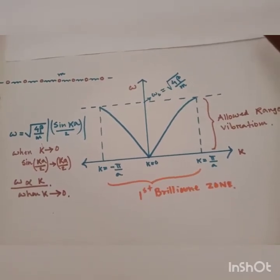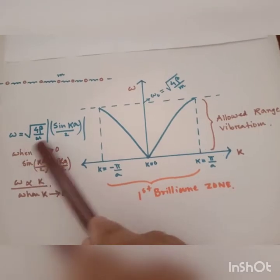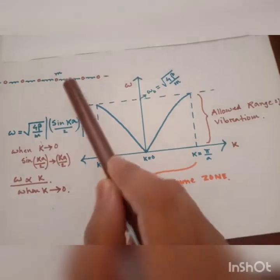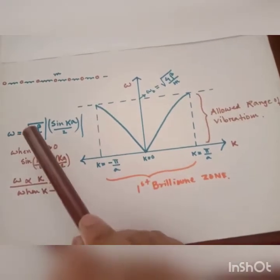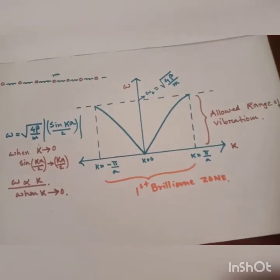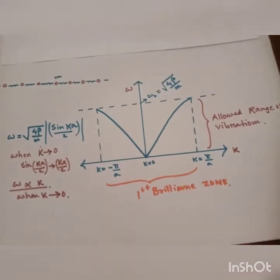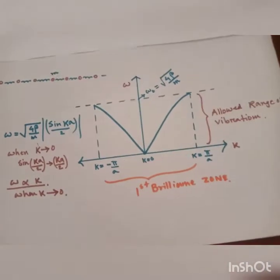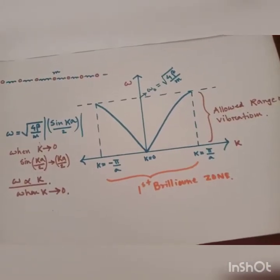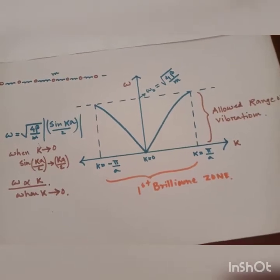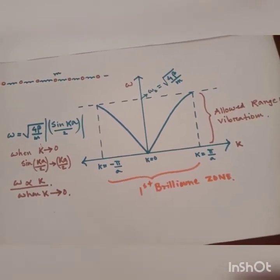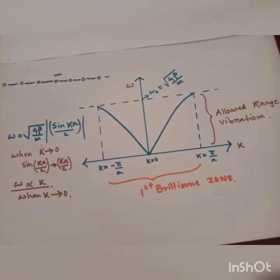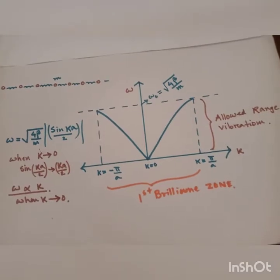We get the following result: omega equals root of 4β/m, where β is the spring constant, times sine of ka/2, where k is the wave vector and a is the interatomic distance. Now in this video I am not giving the entire derivation of this vibration due to monatomic atoms. You can easily get it in a good book.